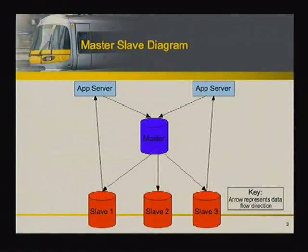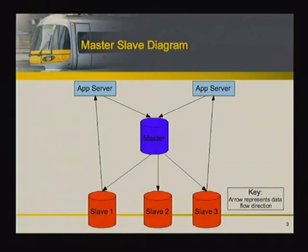Here's a graphical example of what that setup might look like. The arrows show the direction of data — app servers send data to the master, the master spreads that data out so the slaves are identical to it, and then your apps read from those slaves so the master is not burdened with reading tasks.